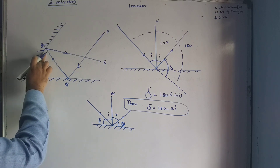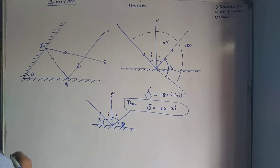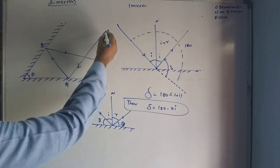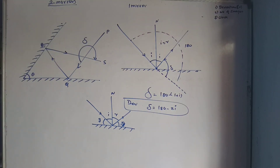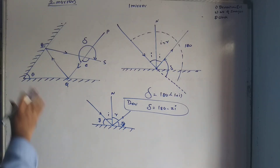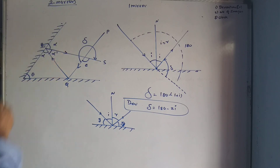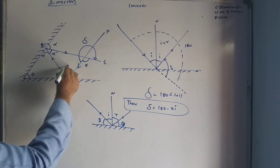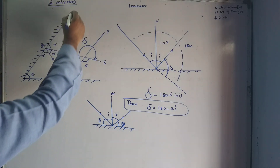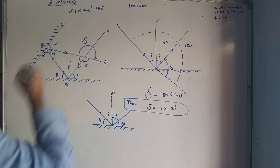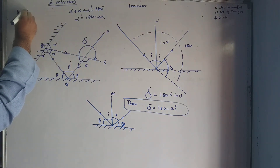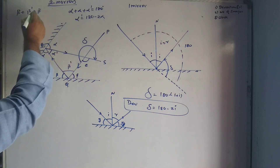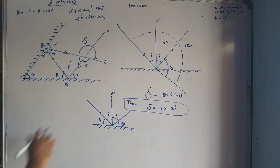The first light ray PQ falls on the first mirror and reflects; it falls on the second mirror, reflects again, and comes out. The deviation is the total angle between the entering ray and the outgoing ray. Let us call the external angle e, and name the angles: alpha and alpha for the first mirror, alpha dash for the reflected side; beta and beta for the second mirror, beta dash for the reflected side. So alpha plus alpha plus alpha dash equals 180 degrees.